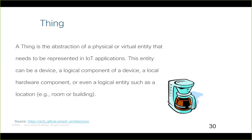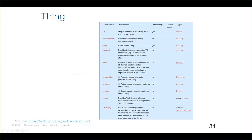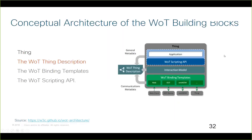How do you define a thing? You need an ID — a URI — to identify things at the application layer. You need a description including the name, the support contact, and the base URI. The property, action, and events are your interaction patterns. You also need links to the thing's resources and the kind of security you implemented.